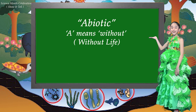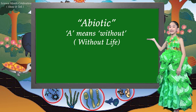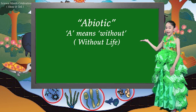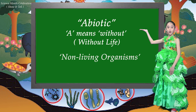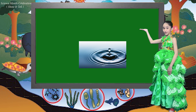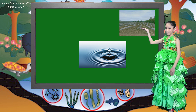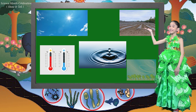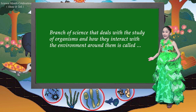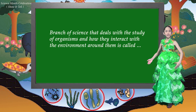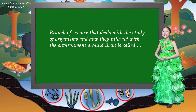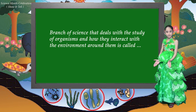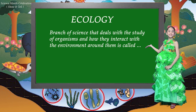On the other hand, the letter A in the word abiotic means without, and bio means life. Thus, abiotic means non-living organisms. This includes water, land, temperature, sunlight, and air. The branch of science that deals with the study of organisms and how they interact with the environment around them is called ecology.